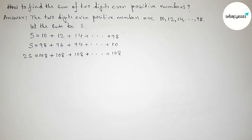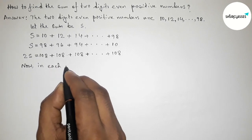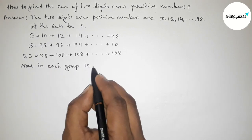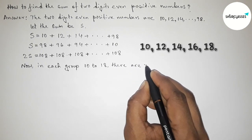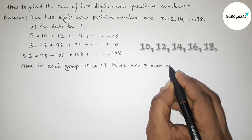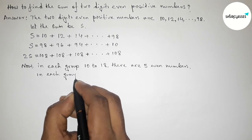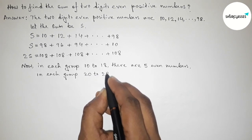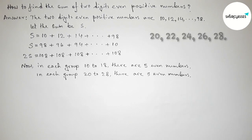Now we need to find the total count of two-digit even positive numbers. We divide all the numbers into groups. From 10 to 18 there are five even numbers. Similarly, from 20 to 28 there are also five even numbers. Dividing all two-digit even numbers this way gives us nine groups.